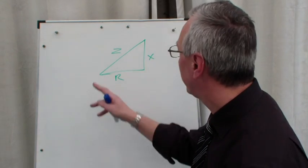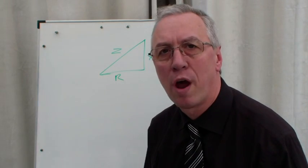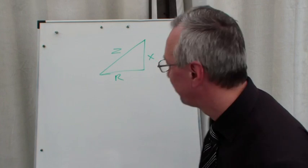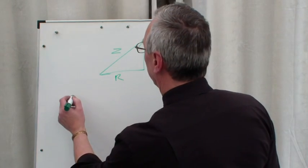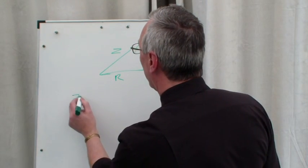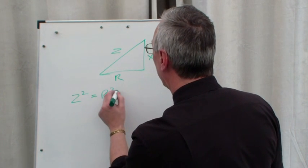Usually the question asks us to find the impedance, and we have to do it by using the triangle and Pythagoras's theorem.